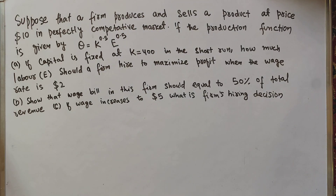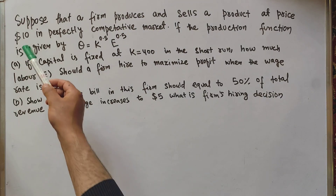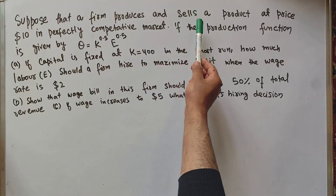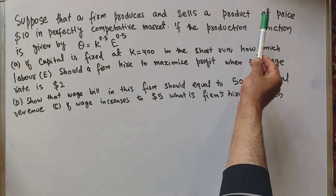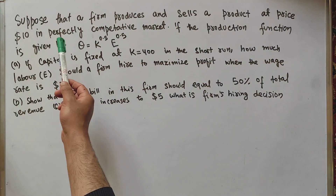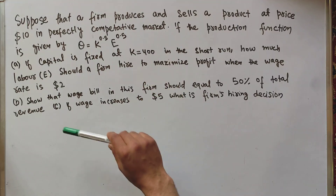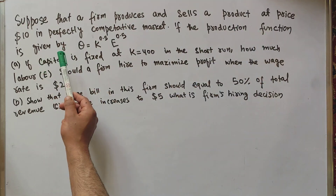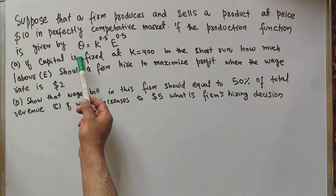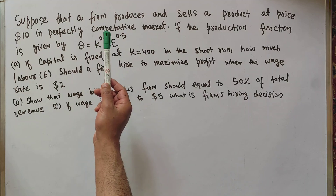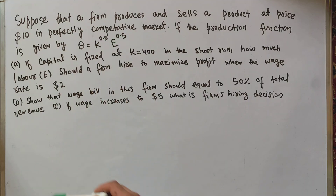Let us solve a question on production function. The question is: suppose that a firm produces and sells a product at a price of $10 in a perfectly competitive market. The production function is given by Q = K^0.5 × E^0.5,